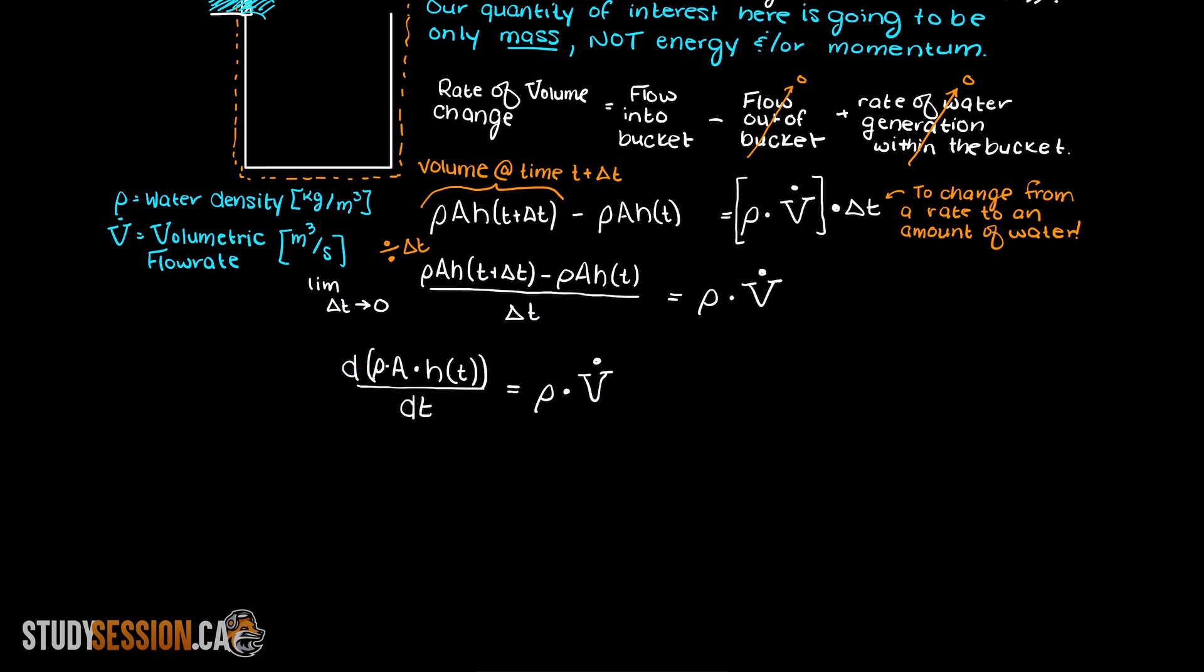Let's also recognize something. The volume of something can be found through the density times the area times the height of the liquid. Additionally, since the area and density are considered constant, they are not going to change with time, we can bring both these terms outside the time derivative.